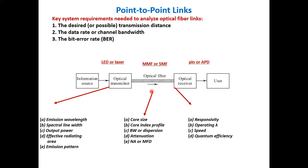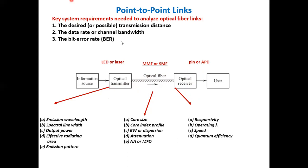Usually, you decide any two components and based on those two selections, you determine the parameters of the third. For example, you can select source and detector, then decide the fiber based on those two choices. Or select transmitter and fiber, then choose the receiver. The question is which one to select first — this was an MCQ question that appeared on the term exam.